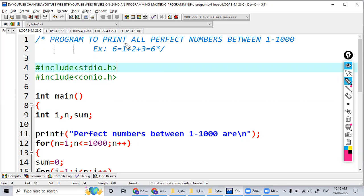Hi students, now let's see how to print all perfect numbers within the given range 1 to 1000. What is a perfect number? We know that 6 is a perfect number.